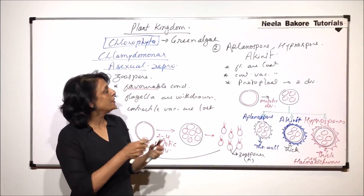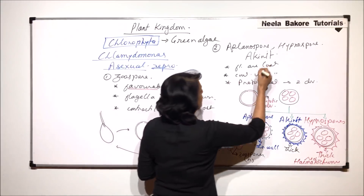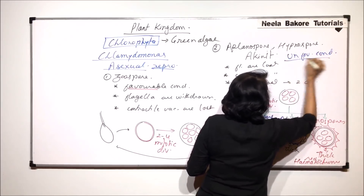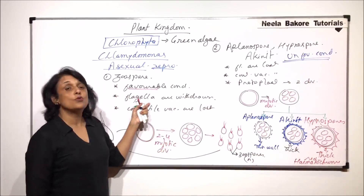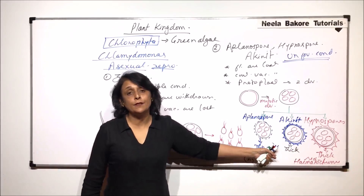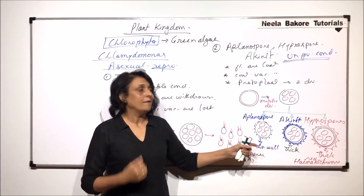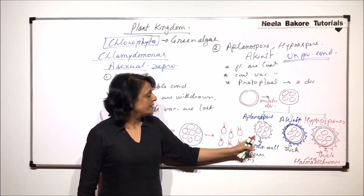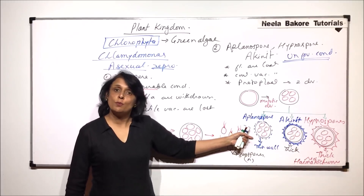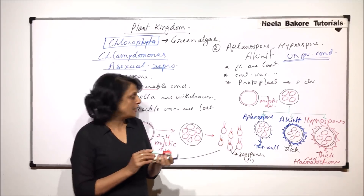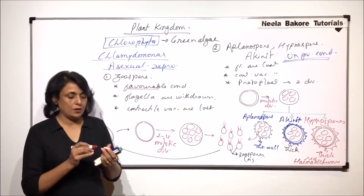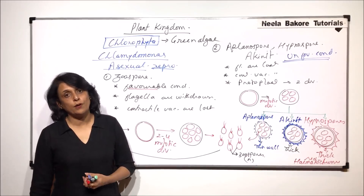These spores are produced during unfavorable conditions, while zoospores are produced in favorable conditions. When favorable conditions return, these thick walls break off and the spores are released. They will develop their two flagella and would lead their life as haploid organisms.